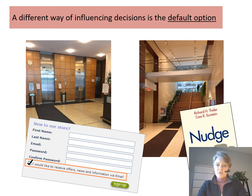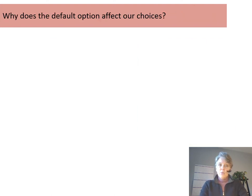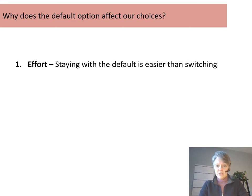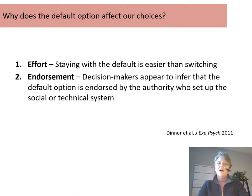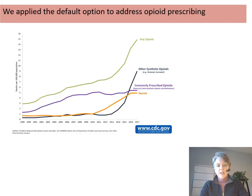These effects, as well as other related effects, are called nudges. I really recommend the great popular book by Richard Thaler, who recently won the Nobel Prize in Economics for this work, and Cass Sunstein. We follow the default option not only because it's easier, but also because we frequently infer — and often correctly — that the default option is the one endorsed or recommended by whoever set up the social or technical system. So we leveraged this.